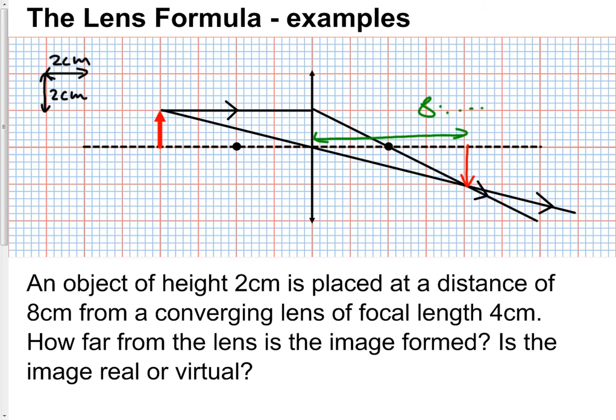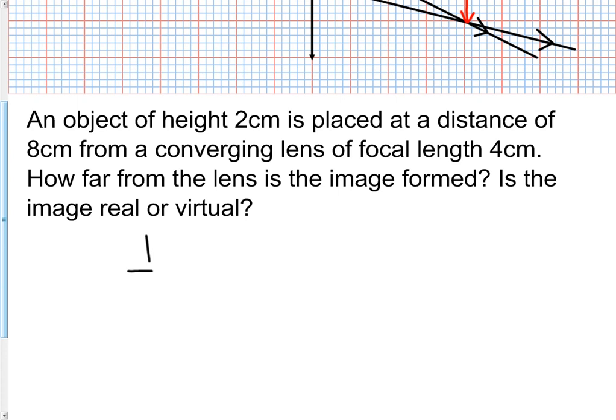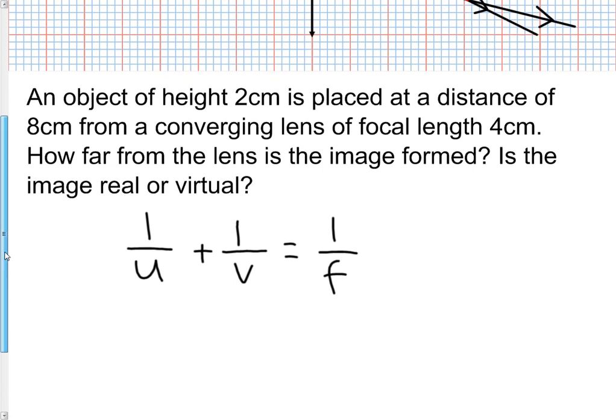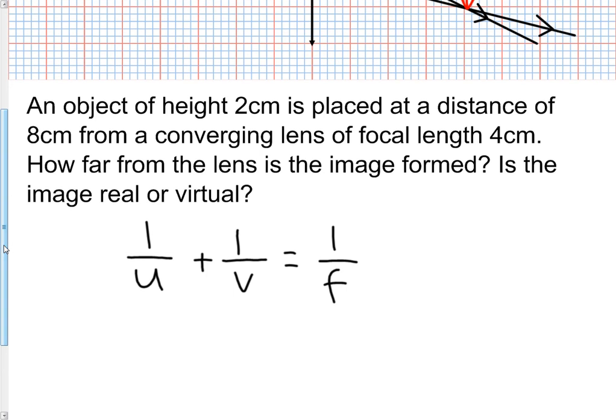Let's try the same question using the formula. The lens formula is 1 over u plus 1 over v equals 1 over f. The easiest approach is to just substitute in the numbers. We're looking to find v, the image distance. u is the object distance, that's 8cm, so 1 divided by 8cm plus 1 divided by v is 1 divided by f.